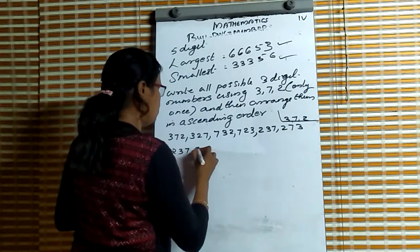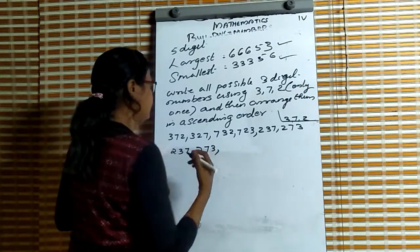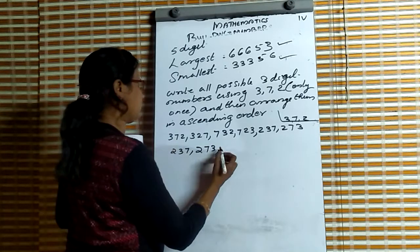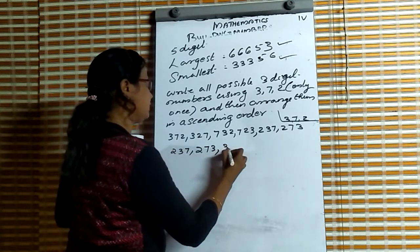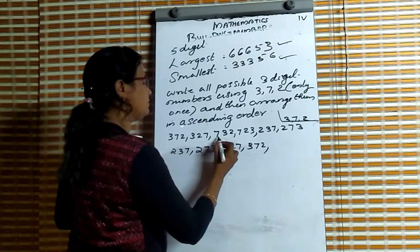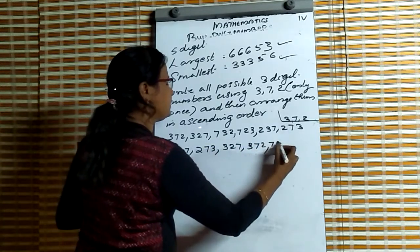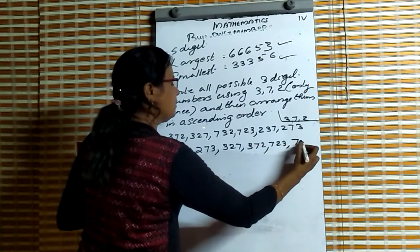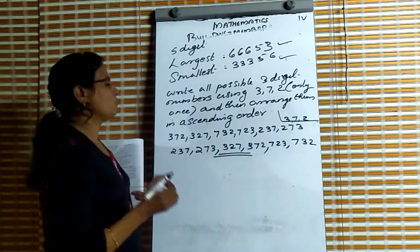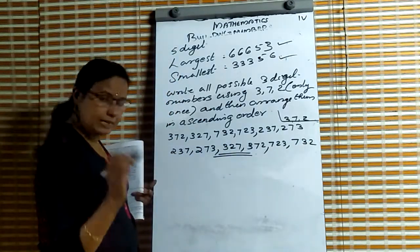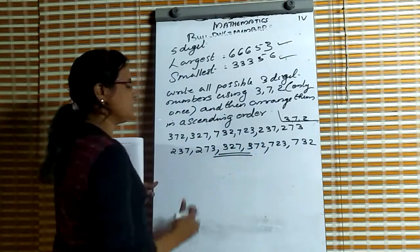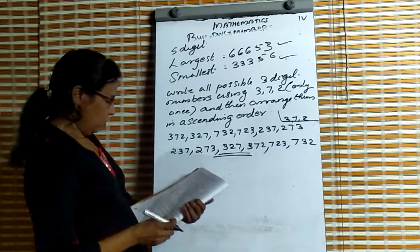Now write these numbers in ascending order — increasing order means smallest number to greatest. The smallest starts with 2: 237, then 273. Next starting with 3: 327, then 372. Then starting with 7: 723, then 732. This is the ascending order.